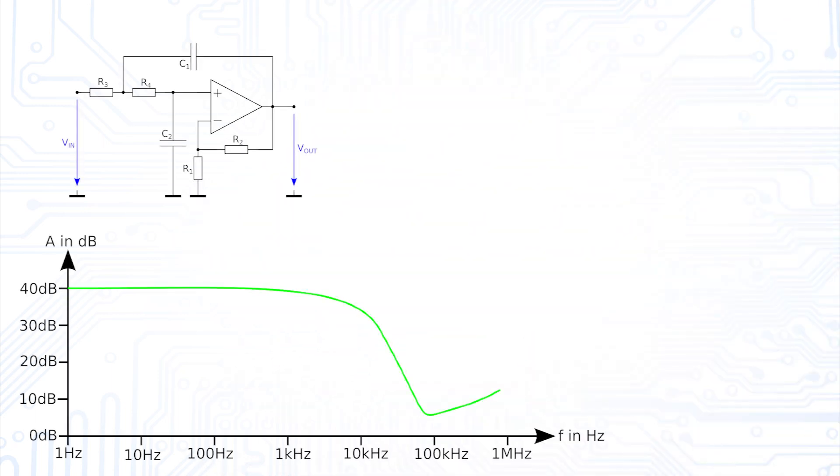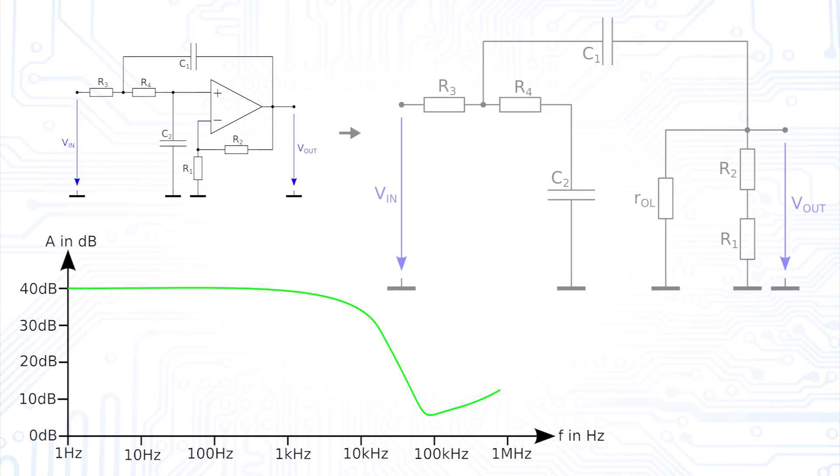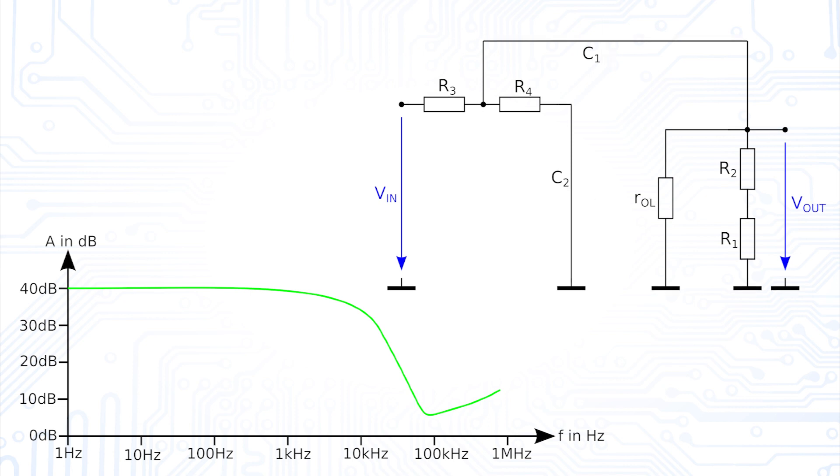Another disadvantage of the Sallen-Key filter is its high-frequency behavior. At high frequencies, the operational amplifier behaves according to its open-loop output impedance, while the capacitors behave like a short circuit. These two effects result in an increase of the transfer function in the Bode plot at high frequencies.